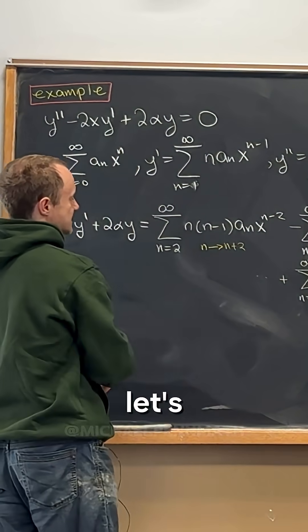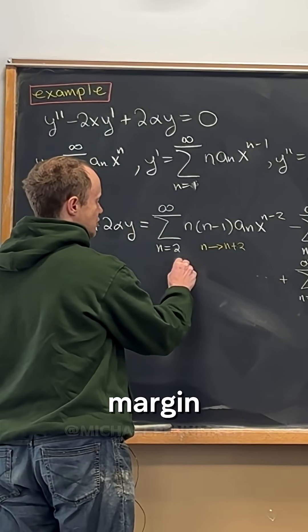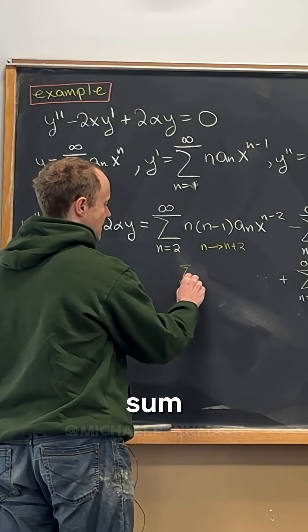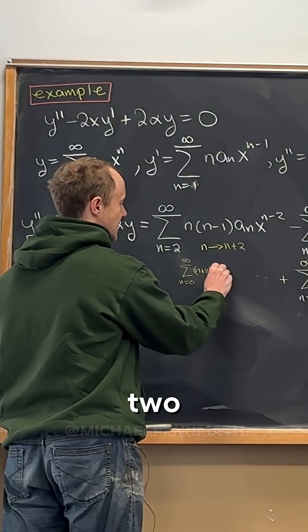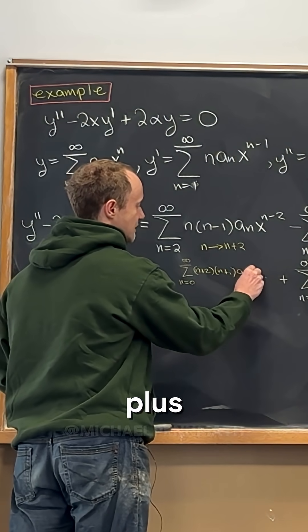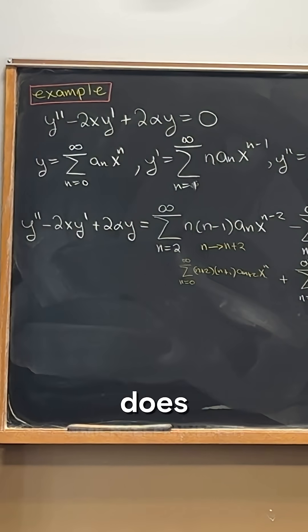All right, so now let's maybe just write this in the margin. So now that's going to turn that into the sum as n goes from 0 to infinity of n plus 2 times n plus 1 times a n plus 2 times x to the n. Does that look right? I replaced every n with n plus 2.